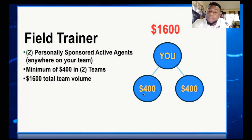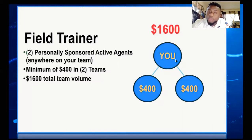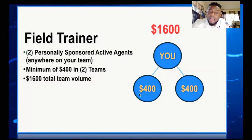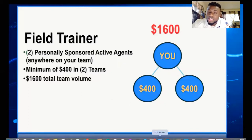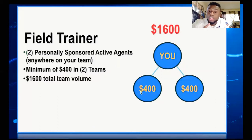Even if an agent who signed directly under someone in your downline — someone moved to your downline — that person still contributes 400 volume to that leg. Any client who signs directly below a person in your team contributes 200 volume. Every new agent who signs equals 400 in volume. Every new client in the system for credit repair contributes 200 in volume.